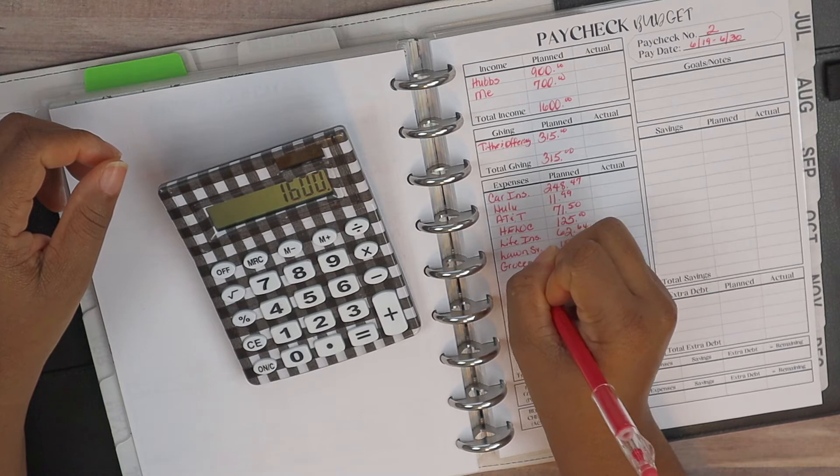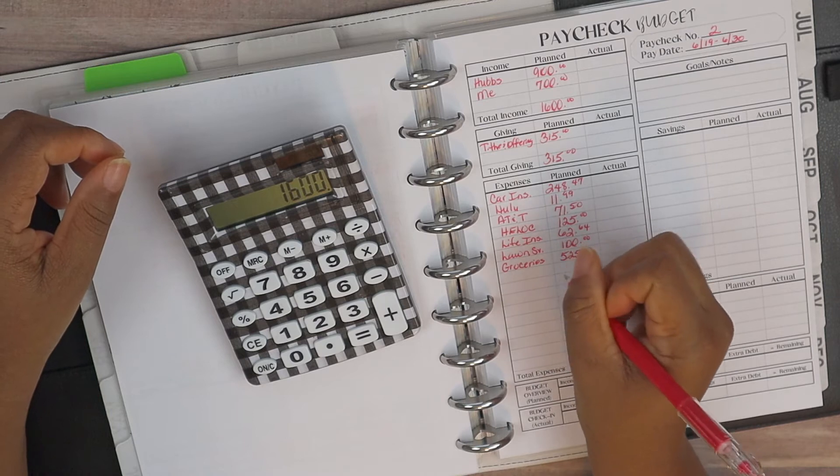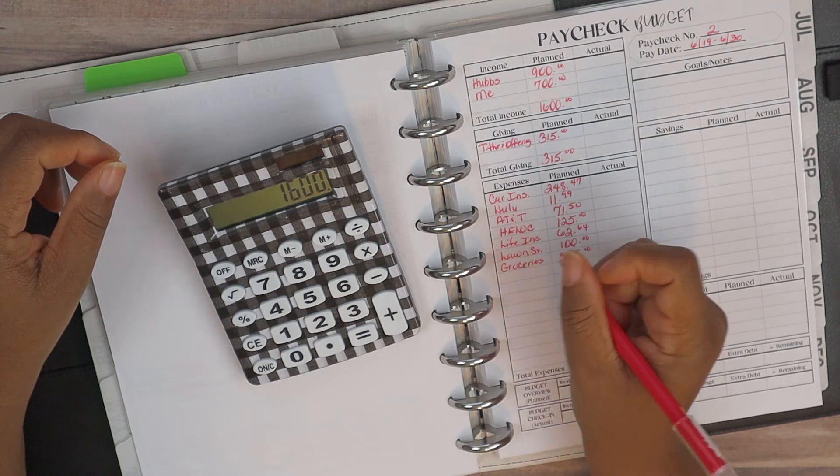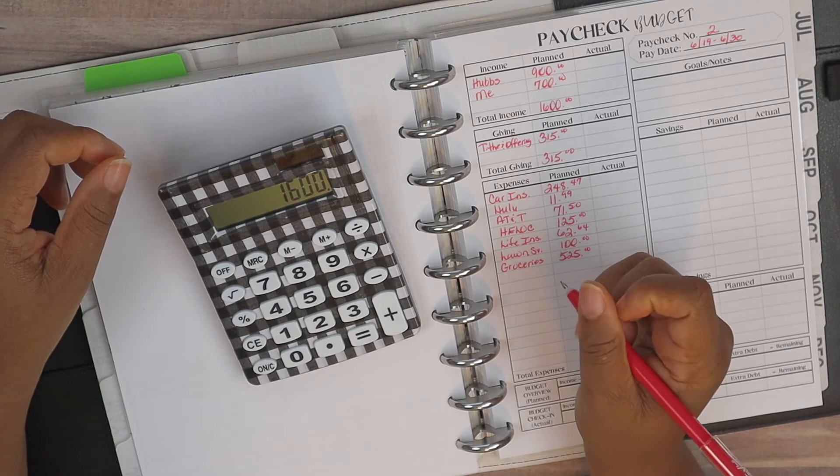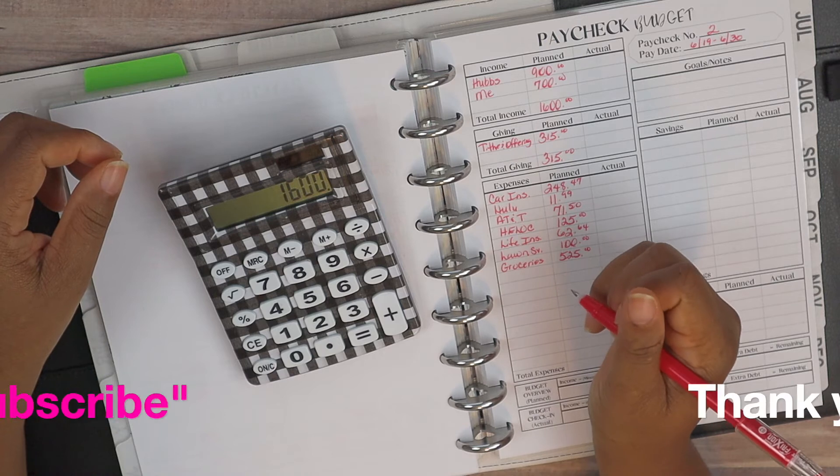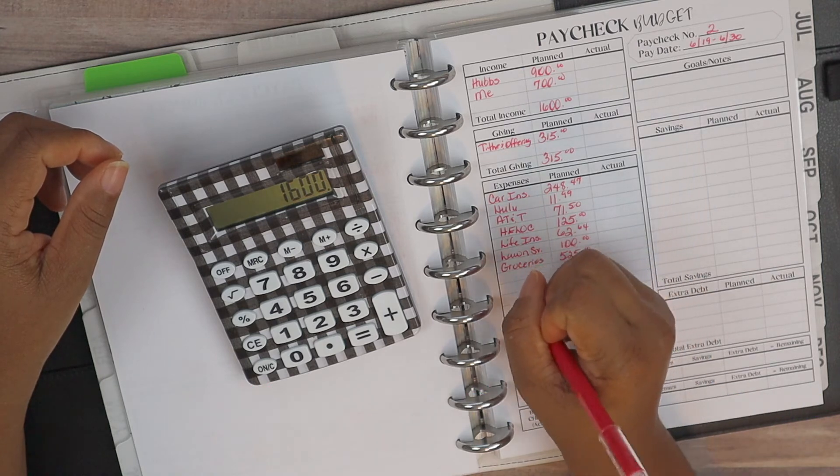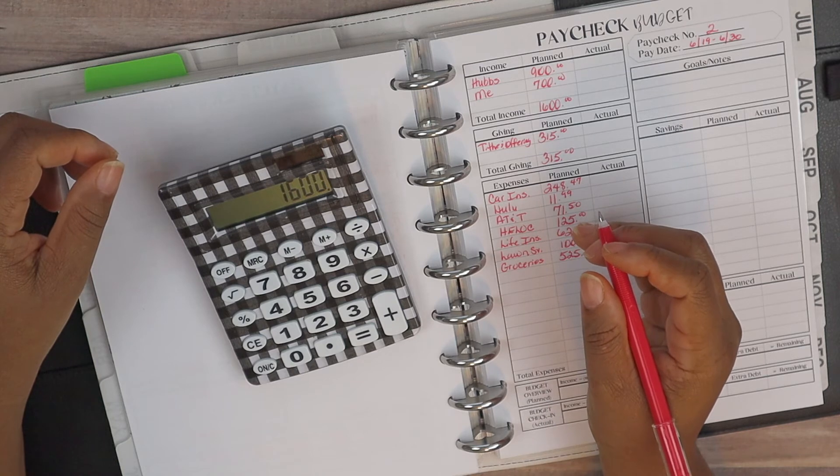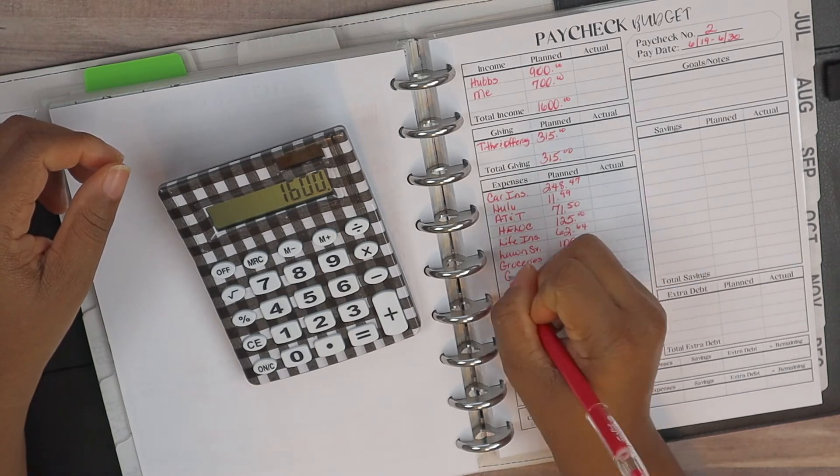For groceries for this paycheck it's at $525, and this of course as I explained in our June monthly budget, our grocery budget has increased to accommodate for the increase in groceries and also me going back to work this month. So I do pack my lunch Monday through Friday, so of course I will be getting extra food to be able to accommodate for that. And with this being an extra paycheck for hubs, I do take out extra for groceries when I know there's an extra paycheck.